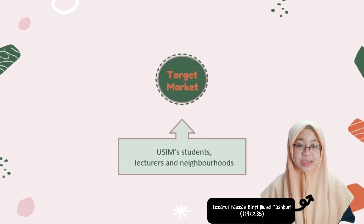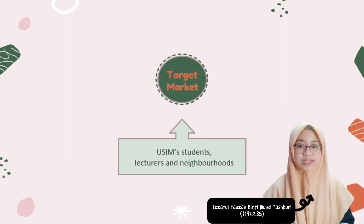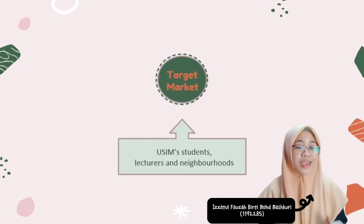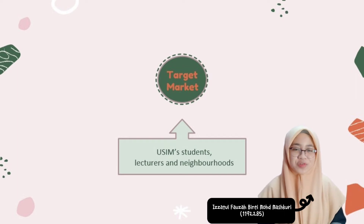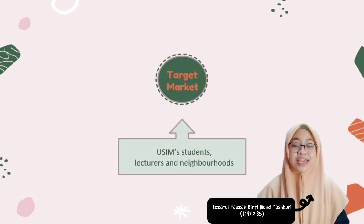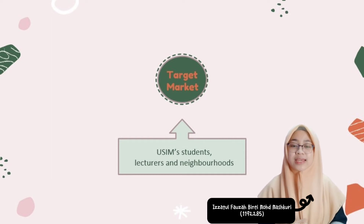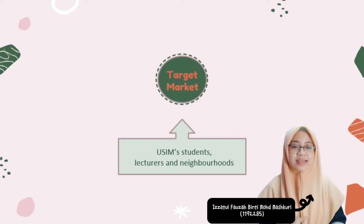Next is the target market. The target market refers to the potential customers we identify to sell our product or service, making it easier for us to determine how and where to market our business. In our target market, we have three customer groups: firstly, students; second, lecturers; and lastly, the neighbourhood.